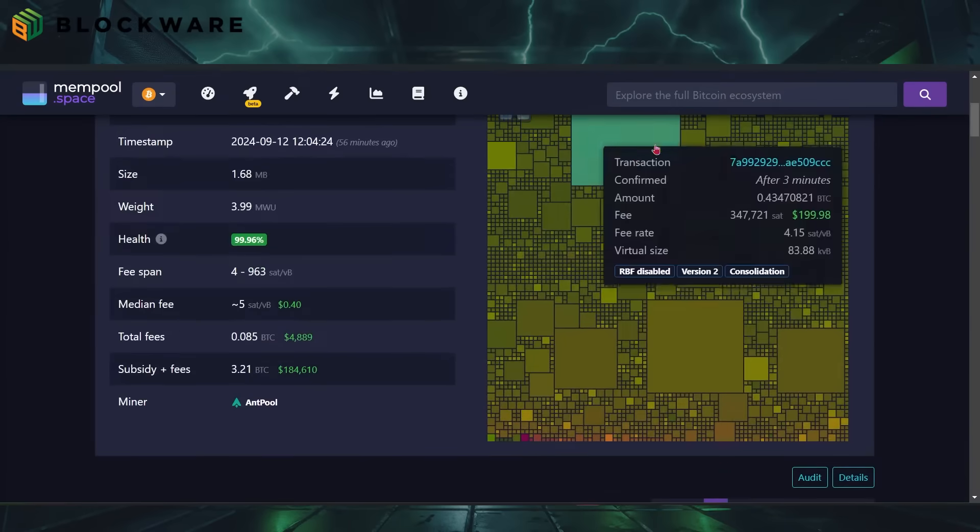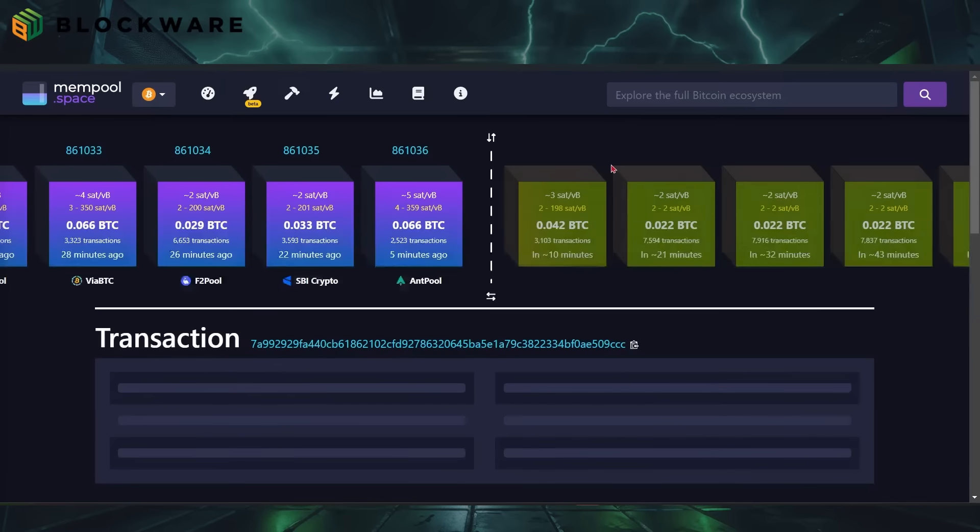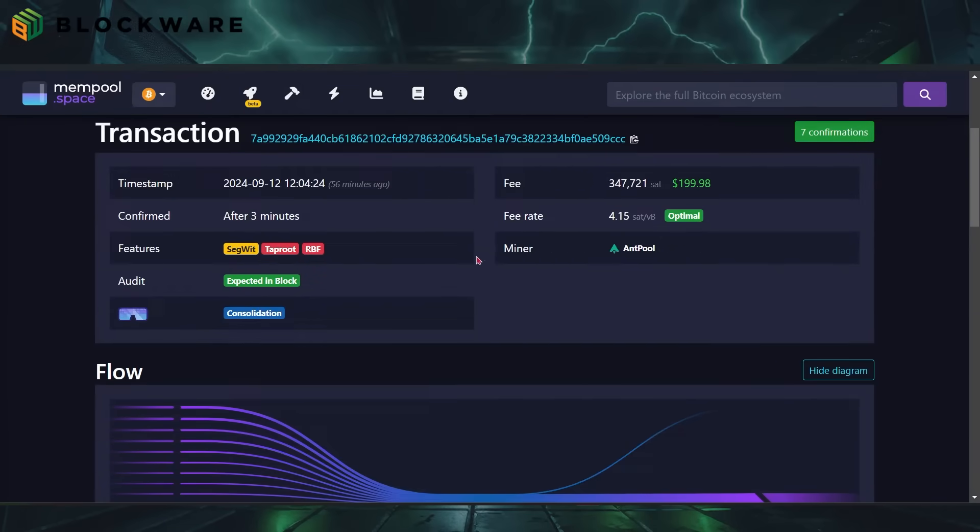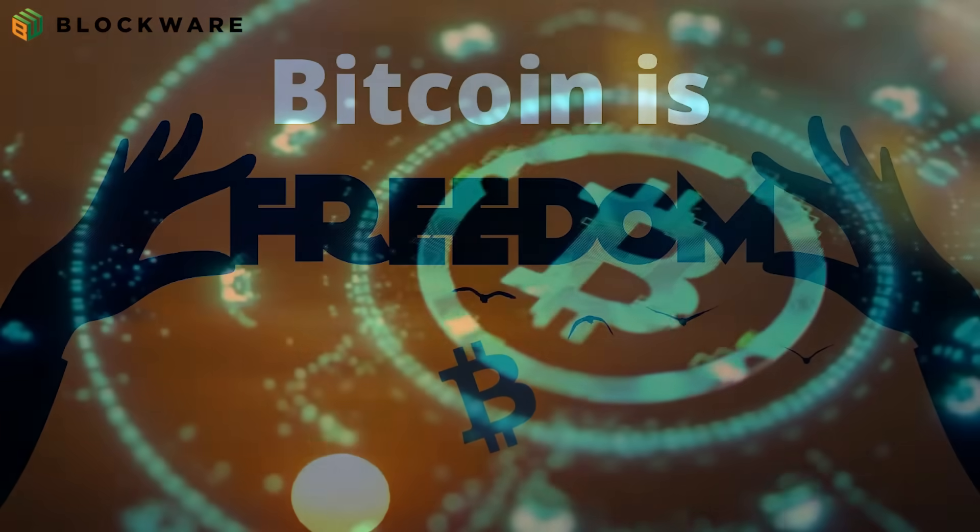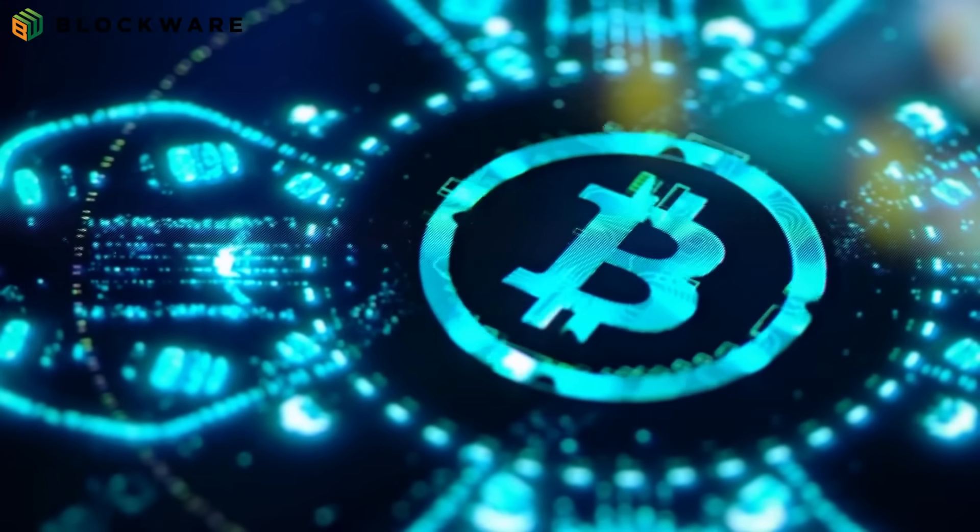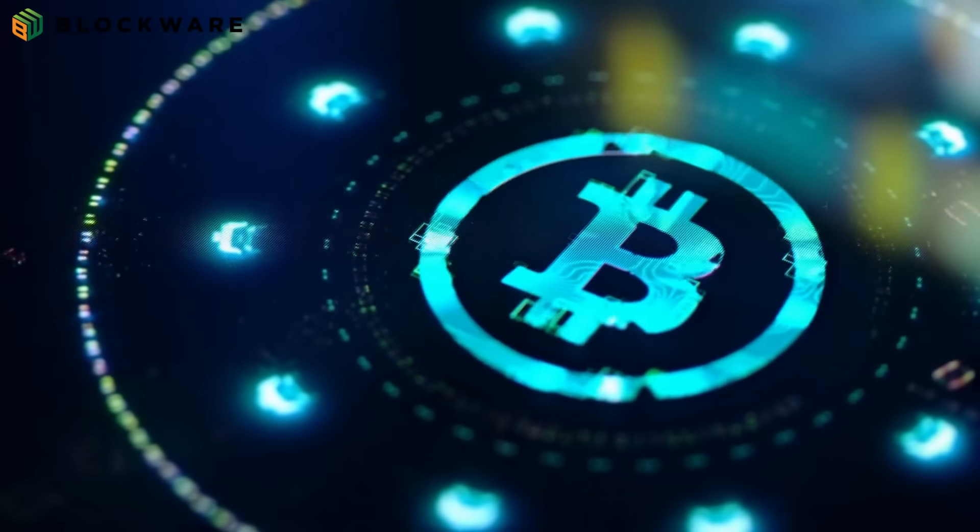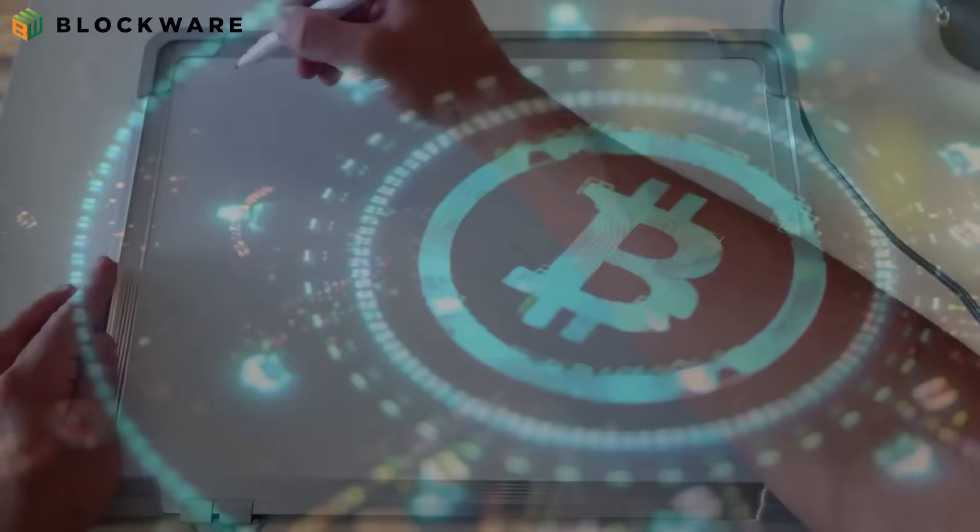Users have full control over their Bitcoin, meaning they can send, receive, and store their assets without relying on third parties. This autonomy is one of Bitcoin's most significant innovations, offering users the ability to transact globally and securely without censorship.